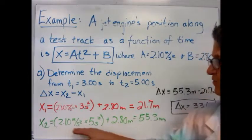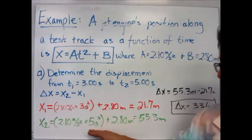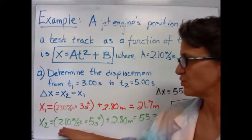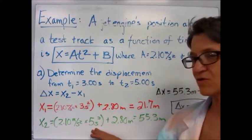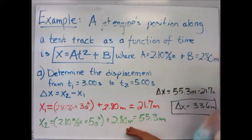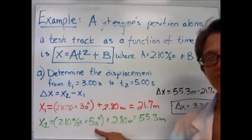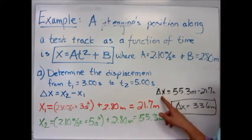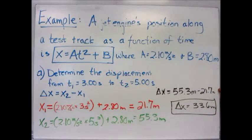Your x₂ at 5 seconds: you take 2.1 meters per second squared times 5 squared plus 2.8. Remember the whole 5 is squared. You get 55.3 meters. Your change of position, 55.3 minus 21.7, gives you 33.6 meters.